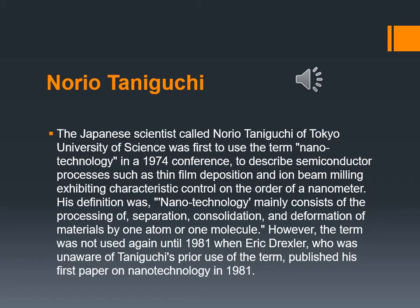The Japanese scientist Norio Taniguchi of Tokyo University of Science was the first to use the term 'nanotechnology' at a 1974 conference, to describe semiconductor processes such as thin film deposition and ion beam milling exhibiting characteristic control on the order of a nanometer. His definition was: nanotechnology mainly consists of the processing of separation, consolidation, and deformation of materials by one atom or one molecule. However, the term was not used again until 1981, when Eric Drexler — unaware of Taniguchi's prior use — published his first paper on nanotechnology.